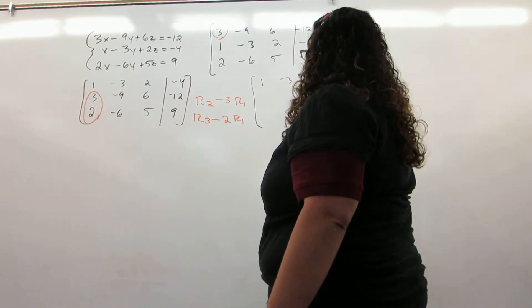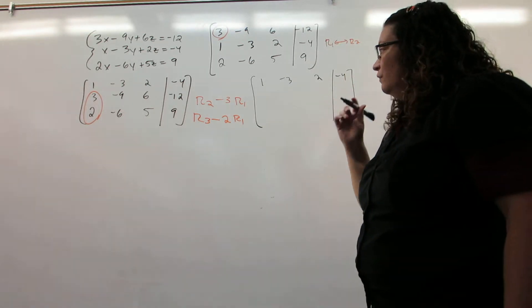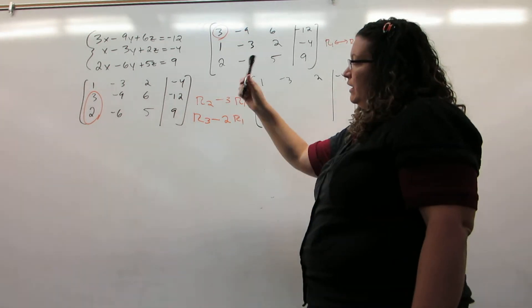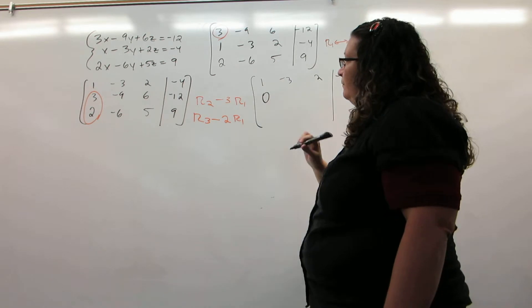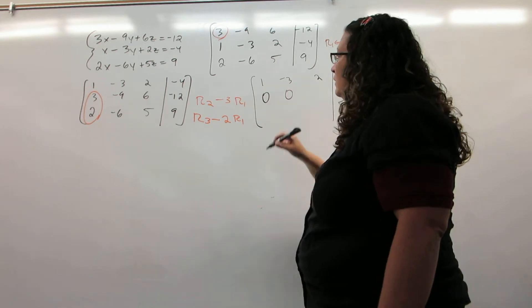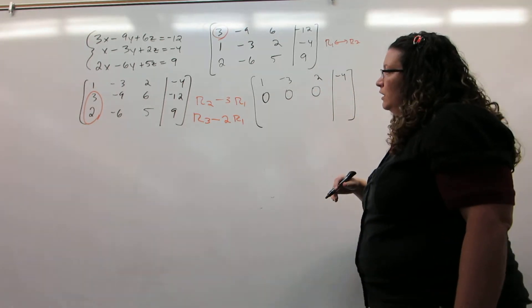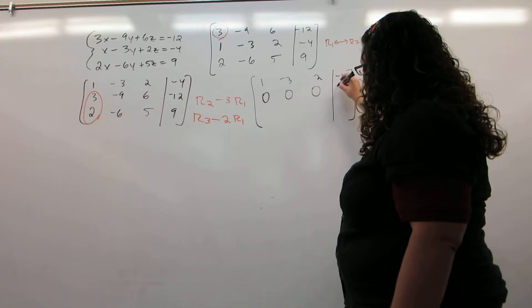The first row does not change. For our second row, we have 3 minus 3 times 1, negative 9 minus 3 times minus 3, 6 minus 3 times 2, negative 12 minus 3 times negative 4.